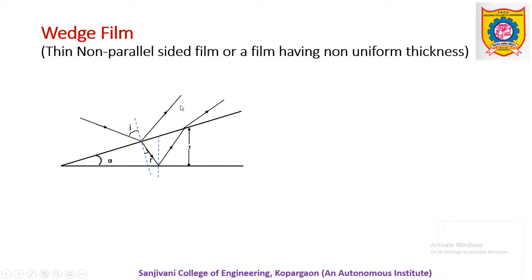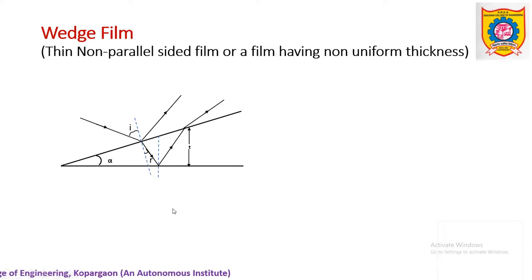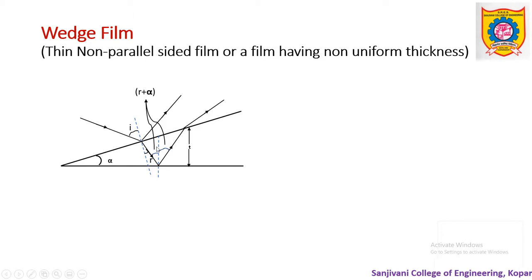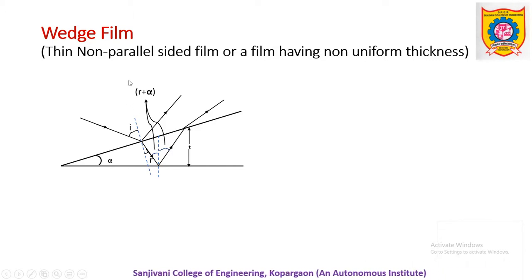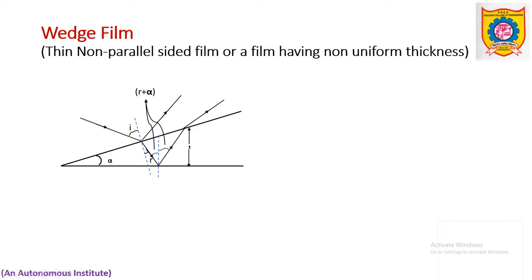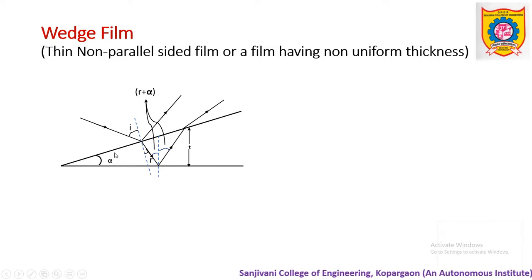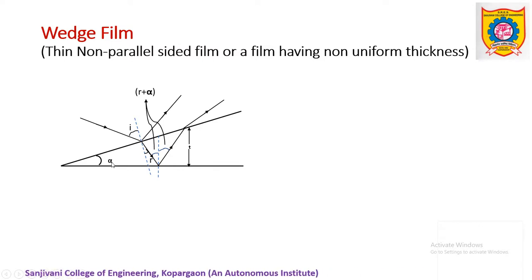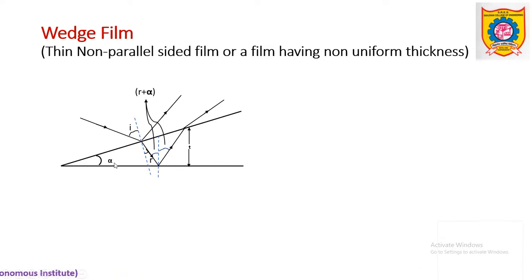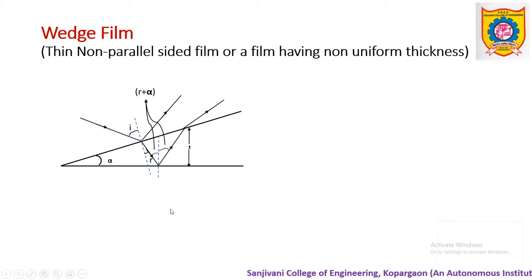These two are the interfering reflected rays. Now this is very important: these two angles are found to be r plus alpha, and this is the unique change between wedge film and parallel-sided film. In the parallel film, these angles were simply r because the two surfaces were parallel to each other with no inclination. But in the present case, the two surfaces have an angle alpha between them, and this angle alpha is reflected over here. Remember this single change.